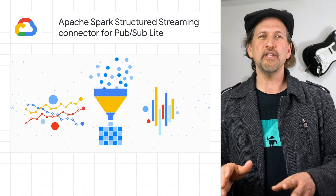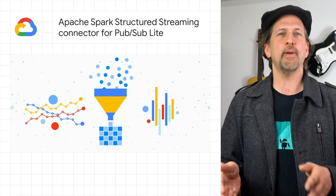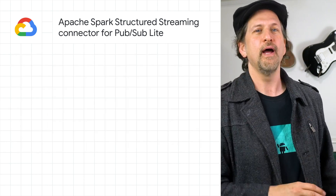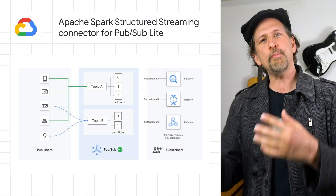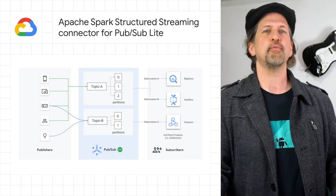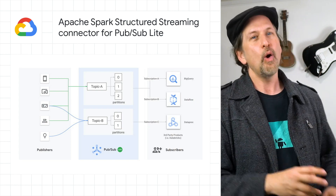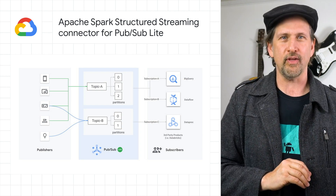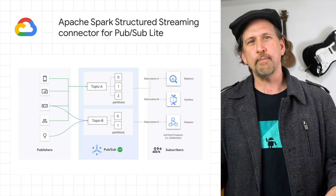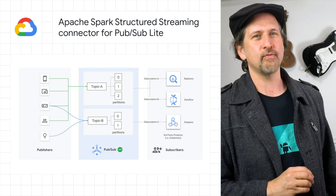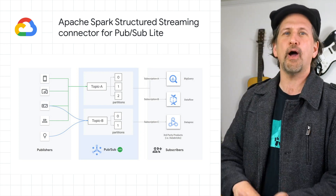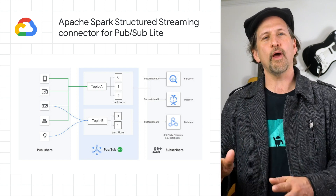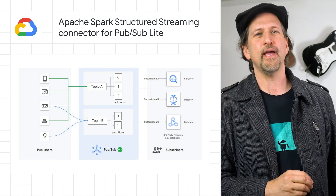We announced the release of an open-source connector to read streams of messages from PubSub Lite into Apache Spark, allowing you to use PubSub Lite as a replayable source for structured streaming's processing engine, with exactly-once guarantees and around 100 millisecond processing latencies. The connector works in all Apache Spark 2.4.x distributions, including Dataproc, Databricks, or manual Spark installations. The post has more on PubSub Lite and the new connector.